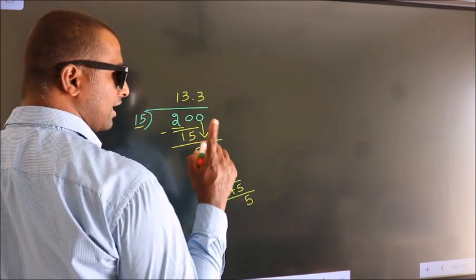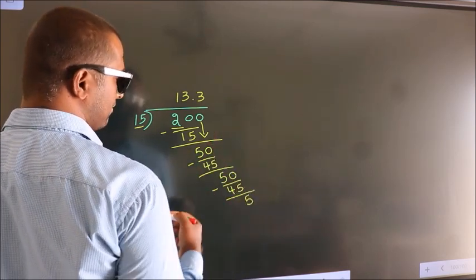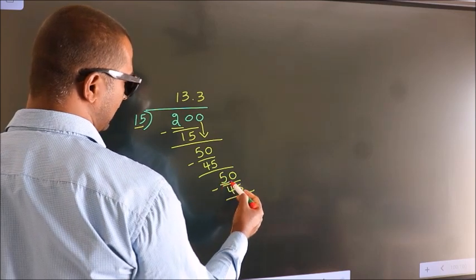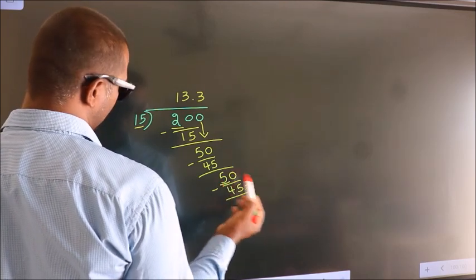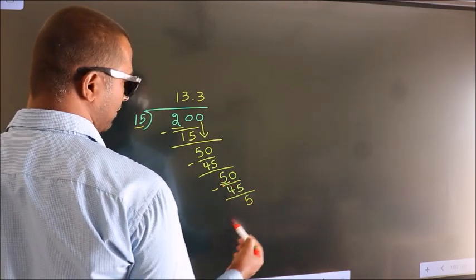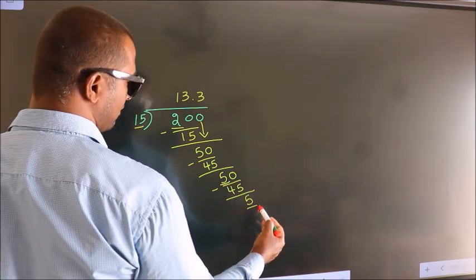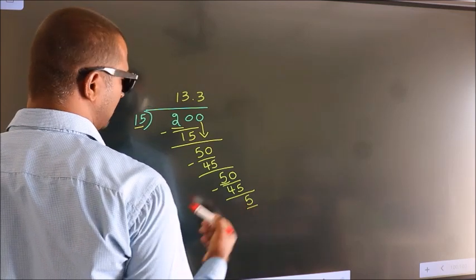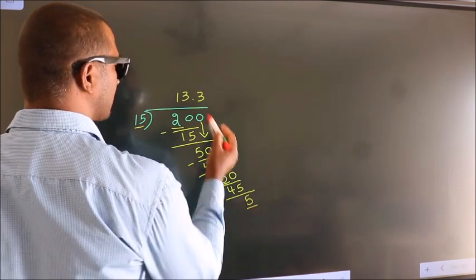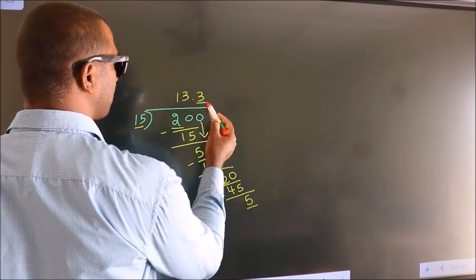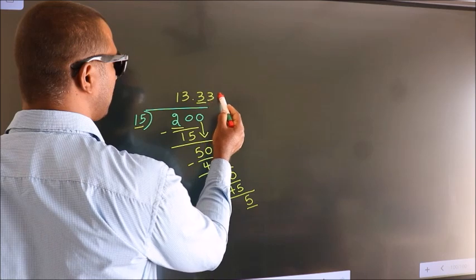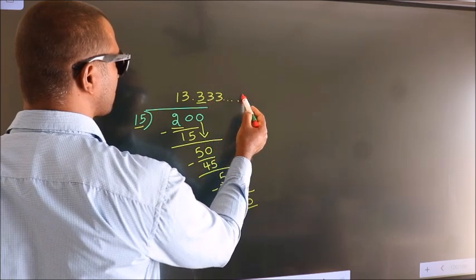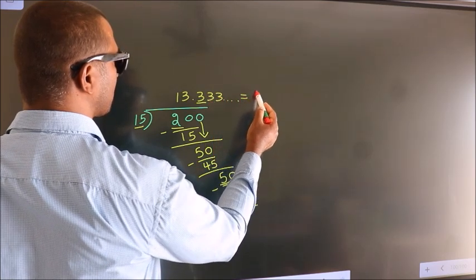Now you observe: here we had 5, and we got 5 again. That means this number keeps on repeating. So this is our quotient.